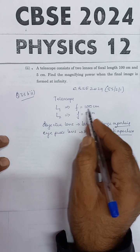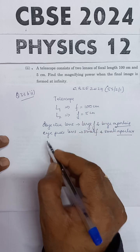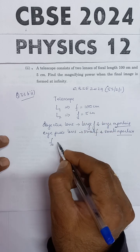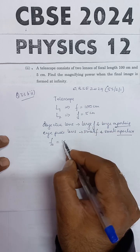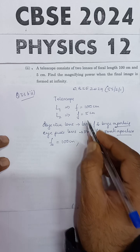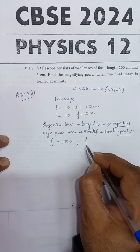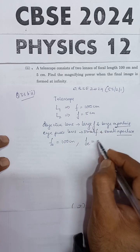So we say that the larger focal length is 100, so this will be FO, focal length of the objective. This is 100 cm. And the smaller focal length is 5, so FE, focal length of the eyepiece is 5 cm.